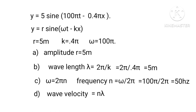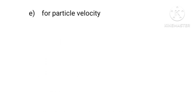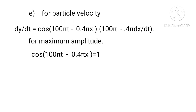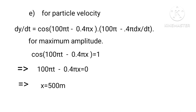Wave velocity V = nλ = 50 × 5 = 250 m/s. For particle velocity, differentiating y with respect to t: dy/dt = 5 cos(100πt - 0.4πx) × 100π - 0.4π × (dx/dt). For maximum particle velocity, cos(100πt - 0.4πx) = 1, which implies 100πt - 0.4πx = 0, giving maximum particle velocity = 5 × 100π ≈ 1570.8 m/s.